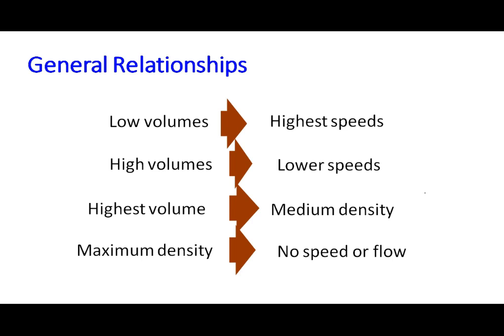The general relationship between the three parameters — volume, speed and density — is that at low volume speeds are very high, and at high volume speeds are low. The highest volume occurs at medium density, which we call the optimum density, and at maximum density there will be no speed or flow. These are the four boundary conditions that must be satisfied by any relationship between speed, density and flow.